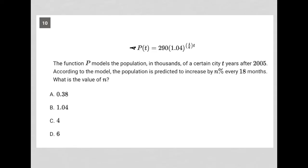So this question starts off by providing us with this function here, P(t) equals 290 times 1.04 to the 4/6t power.